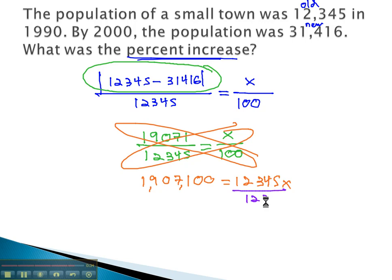Divide both sides by 12,345. And we get x is equal to 154.48 percent.